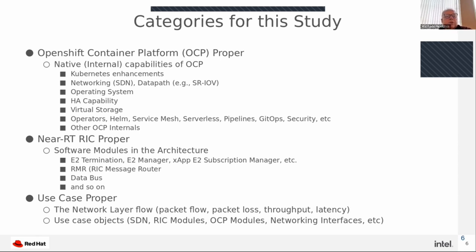The near real-time RIC itself is composed of many software modules. In particular, in support of X-Apps, the E2 interface is a very critical interface. We can apply the building blocks to the E2 client on the OCU and DU, and to the RIC processes associated with E2, such as the E2 termination, E2 manager, and X-App E2 subscription manager. There are also other RIC modules like the RMR — the RIC message router — the data bus, and so on.